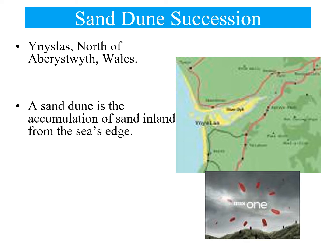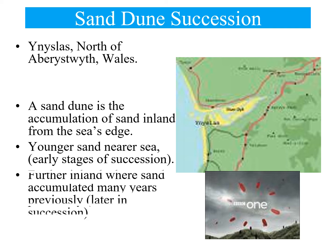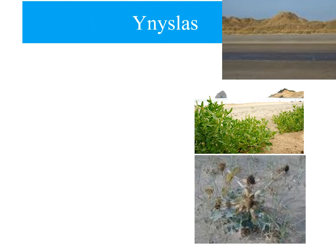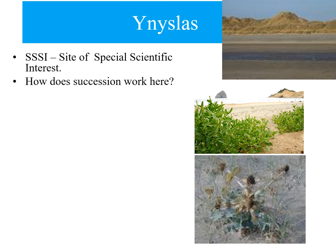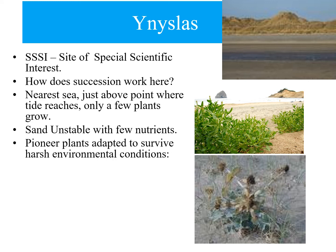Going back to Ynyslas — an area of outstanding natural beauty and special scientific interest in Wales — the younger areas are near the sea. The early stages of succession with pioneer species are closest to the sea, and as you go inland, you see natural succession as soil quality increases. You can go all the way from sand dunes up to mountains with trees as you move further from the sea. Nearest the sea, there are very few plants, the sand is unstable, and there are very few nutrients.